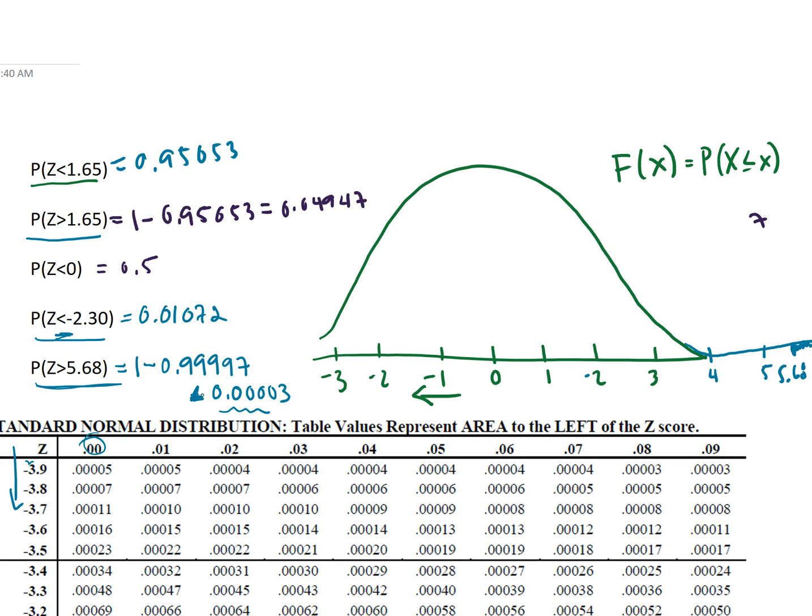So if we want to get an exact value of this then we can use software otherwise we can just use the table. All right hopefully this video helped you understand how we can use the standard normal distribution table to find proportions and probabilities for z-scores.